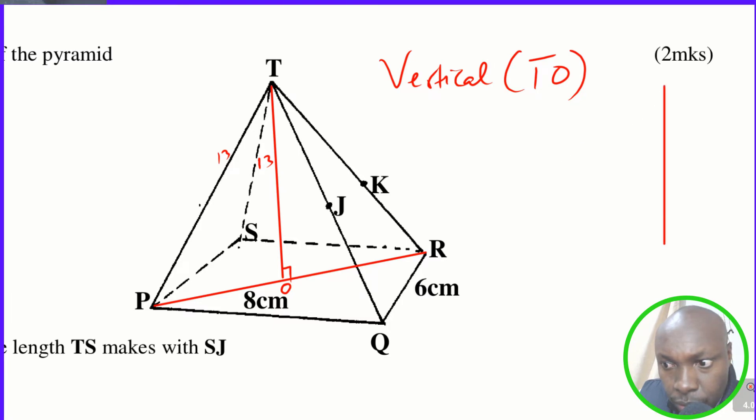So this is how it would be. The triangle will be like this, so T is there, then O is there, then P is there. So this is the triangle that you're looking for. TP is 13 centimeters.